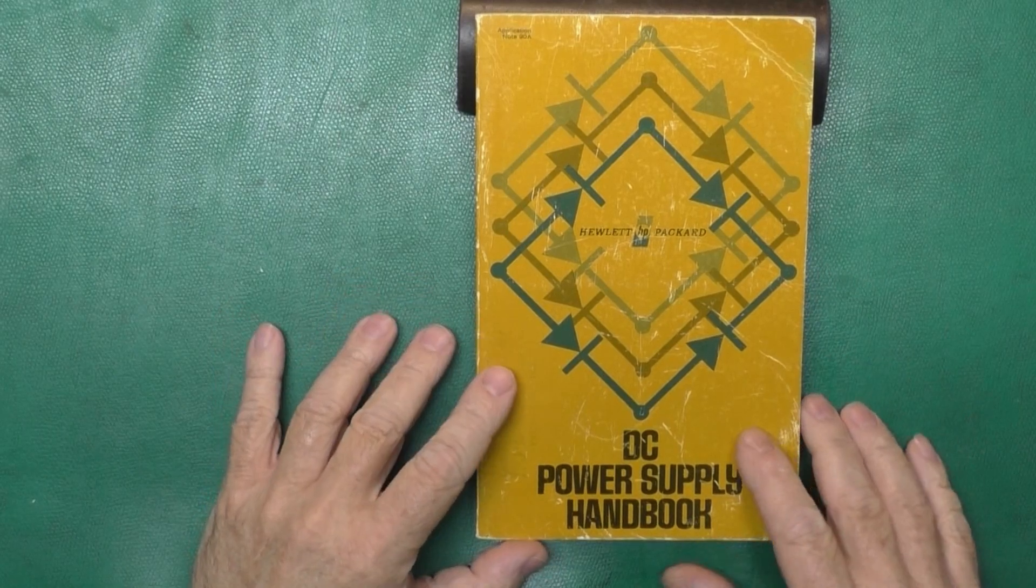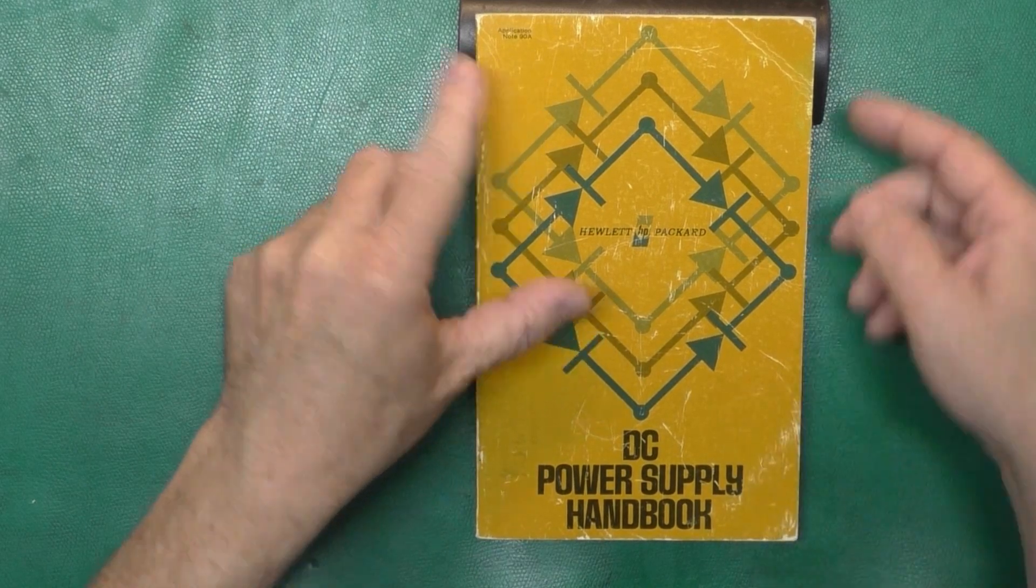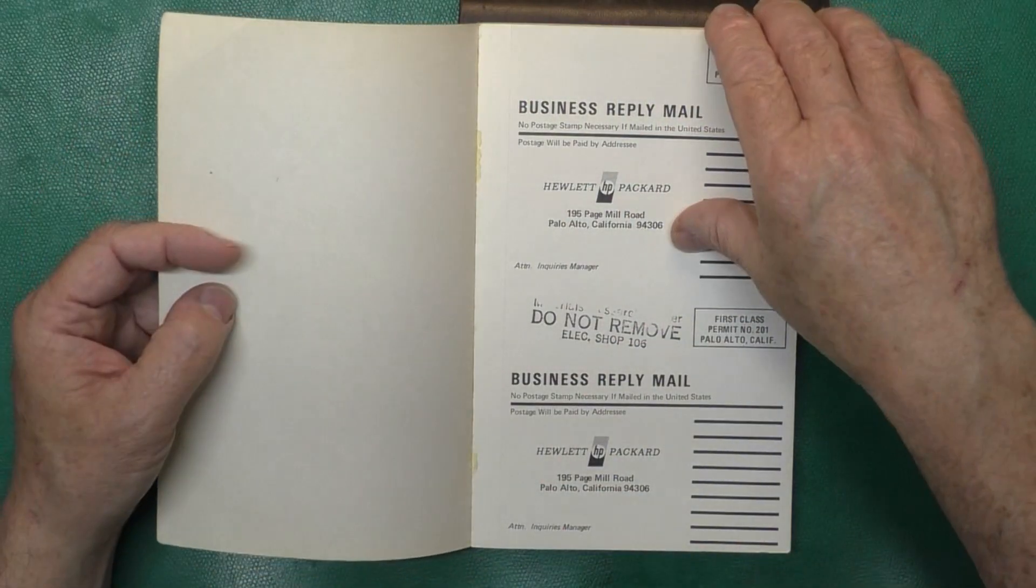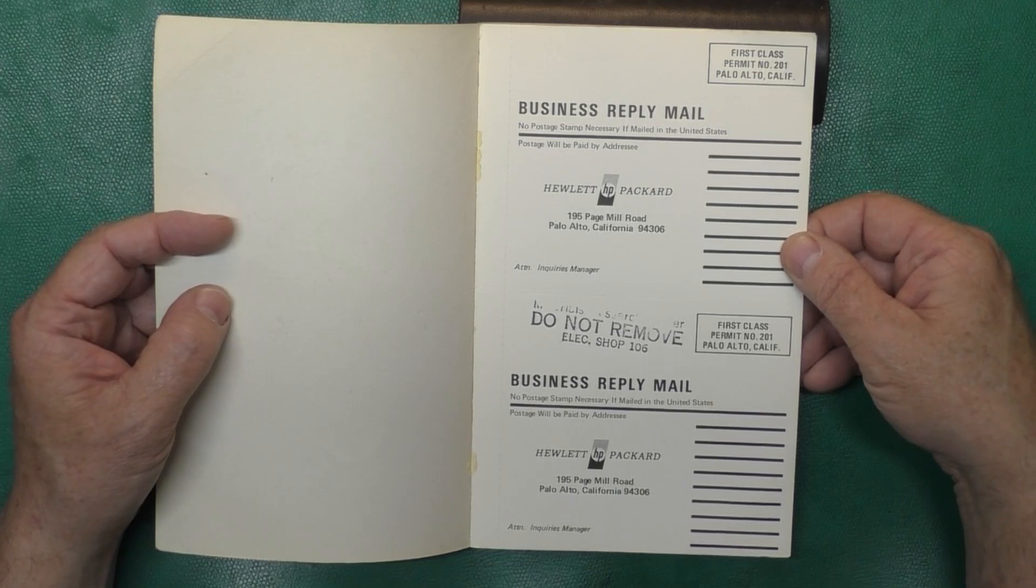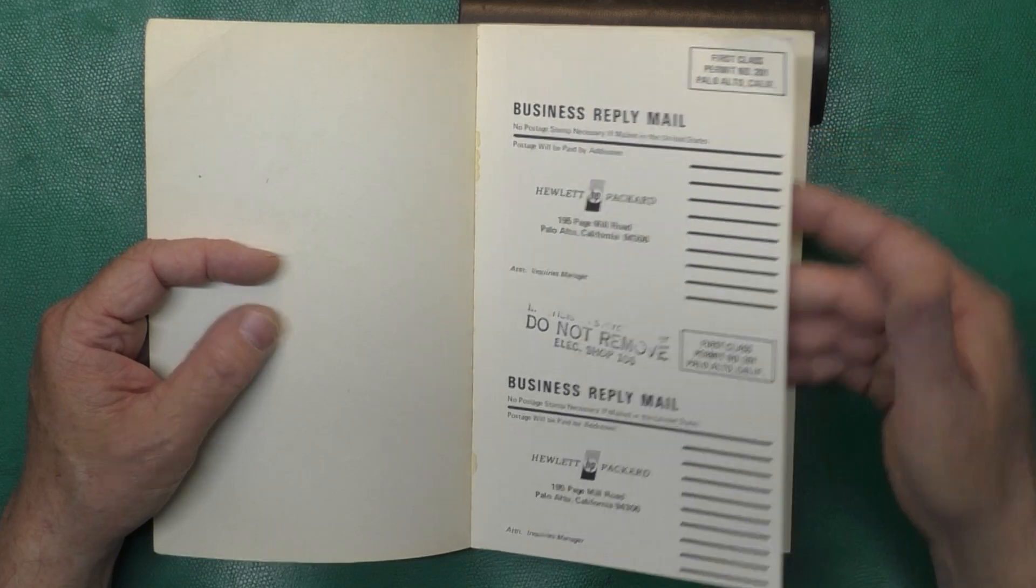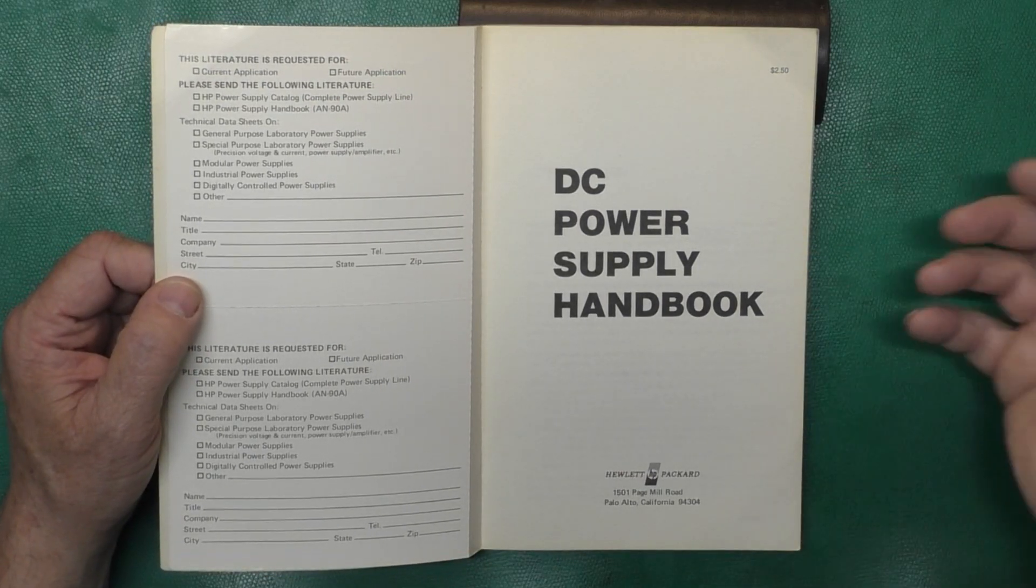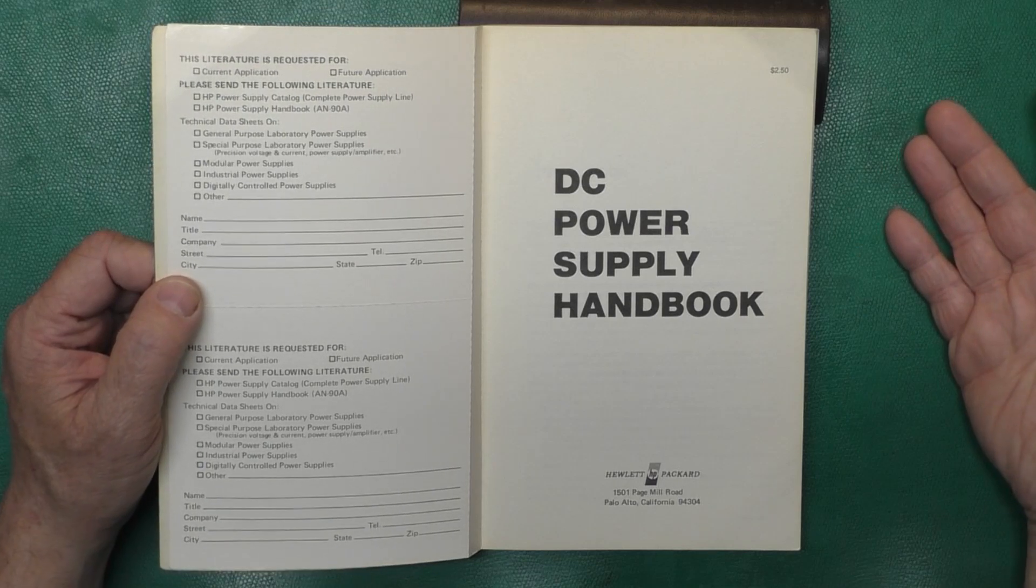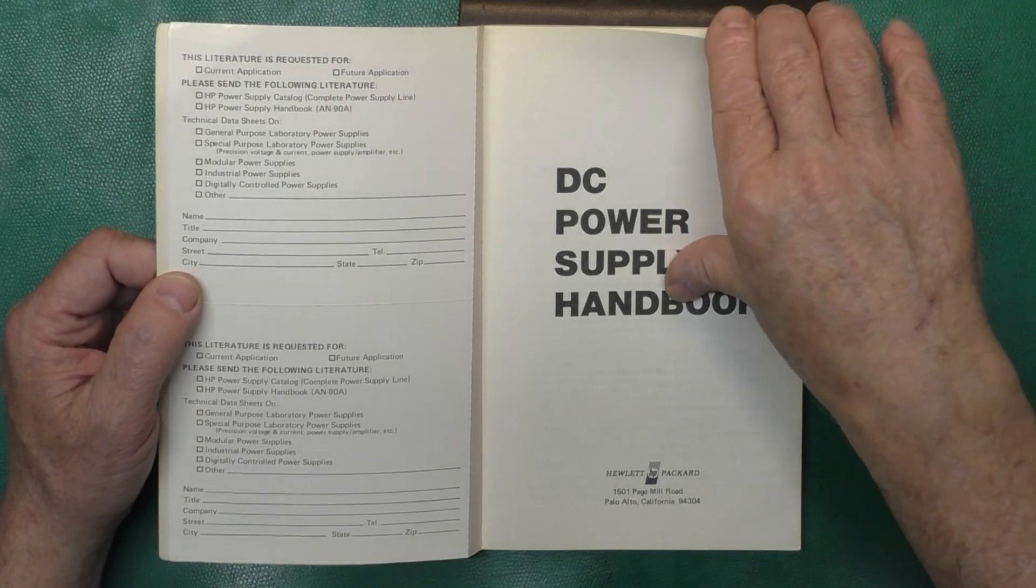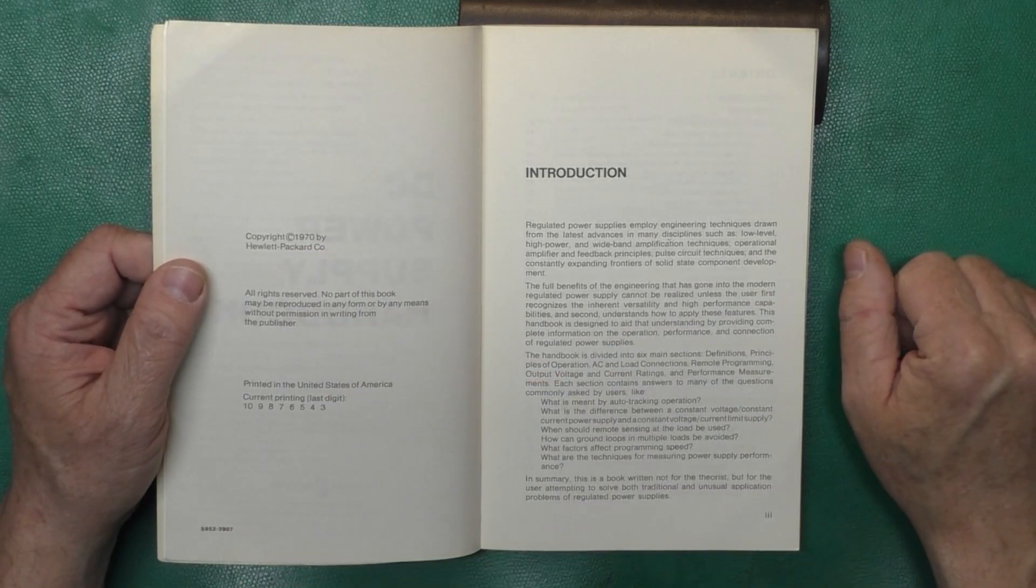Okay, our next book is a DC Power Supply Handbook by Hewlett Packard. This is Application Note 90A. I've got the book kind of propped up here to reduce the glare. If it's by Hewlett Packard, it's a good book. It still has these business reply mail, no postage necessary type things in here. You can send them a literature request. Before everything was online, you could write to a company, and some of the materials they would send you for free, and some had a small cost like this $2.50. It's the way technical materials were distributed. And this is copyright 1970 by Hewlett Packard.